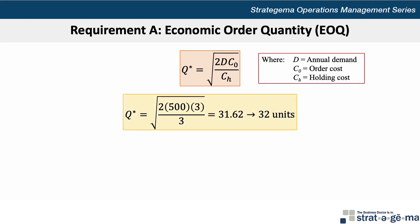Applying our variables, Q star equals the square root of 2 times the annual demand of 500 times the order cost of $3 divided by a holding cost of $3, calculated as the selling price of $12 multiplied by the 25% annual holding cost rate. The holding cost can be a fixed value or percentage of the selling price as it is in this problem. This works out to 31.62 units, which we can round to 32 since we can't order a partial unit. Let's use the more exact 31.62 for our remaining calculations and store that in our calculator memory.